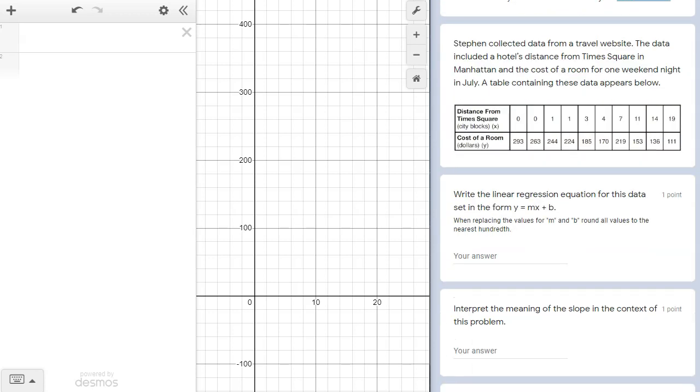Now let's read our task. It says that Stephen collected data from a travel website. The data includes a hotel's distance from the popular travel destination Times Square in New York City, and it pairs that to the cost of the room.